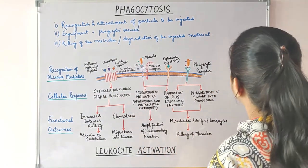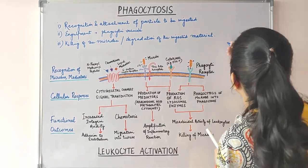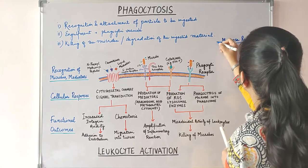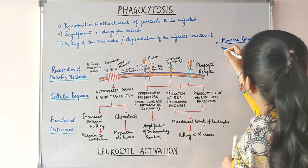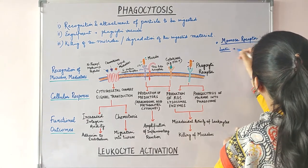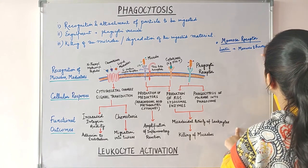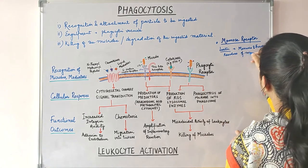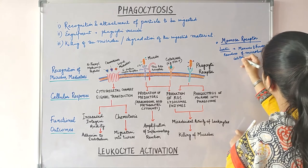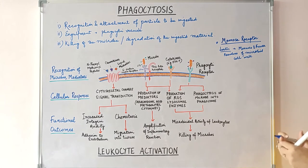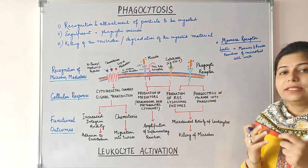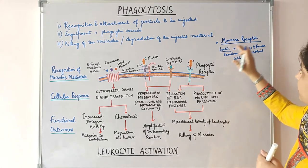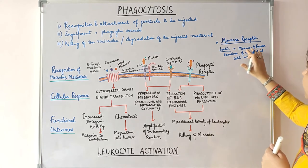There are several types of phagocytic receptors. The first is the mannose receptor, which is actually a lectin that binds to mannose and fucose residues present in the glycolipids and glycoproteins of the microbial cell wall. In mammalian glycolipids and glycoproteins, the residues are sialic acid and N-acetylgalactosamine — not mannose and fucose. In this way the mannose receptor binds specifically to the microbial cell wall by identifying mannose and fucose residues.